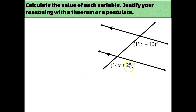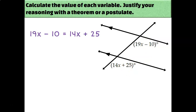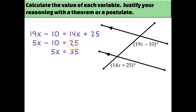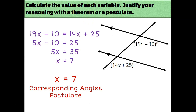Let's try another one. My two labeled angles are corresponding because they're both in the bottom right-hand corner out of the four angles created by the intersection of each line. Since they're corresponding angles, they must be congruent, so I set up: 19x minus 10 equals 14x plus 25. Subtract 14x to get 5x, add 10 to get 35, divide both sides by 5 to get 7. x equals 7 because of the corresponding angles postulate.